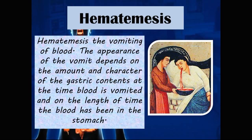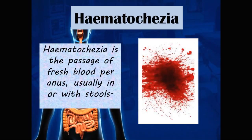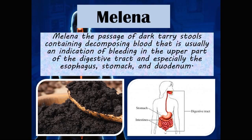Hematemesis is the vomiting of blood. The appearance of the vomit depends on the amount and character of the gastric contents at the time of vomiting and on how long the blood has been in the stomach. Hematochezia is the passage of fresh blood per anus, usually with stools. Hematochezia differs from hematemesis in that hematemesis is vomiting of blood while hematochezia is the passage of fresh blood in stools.